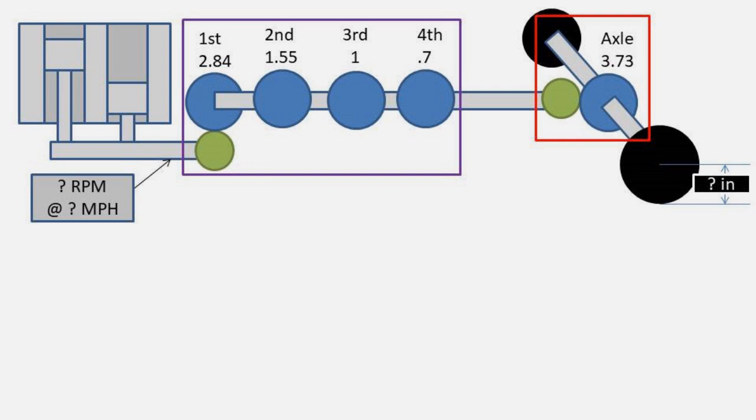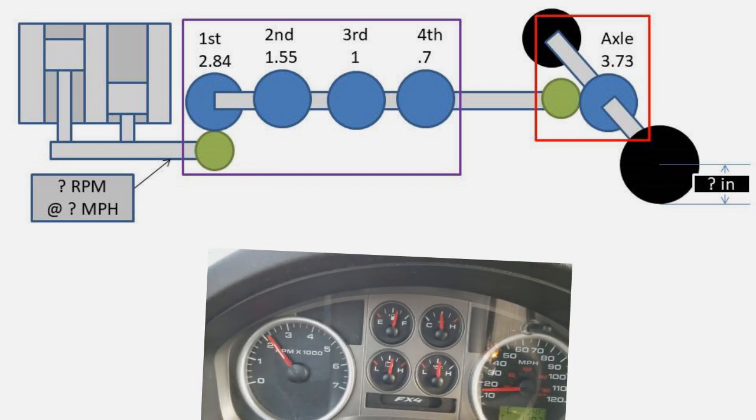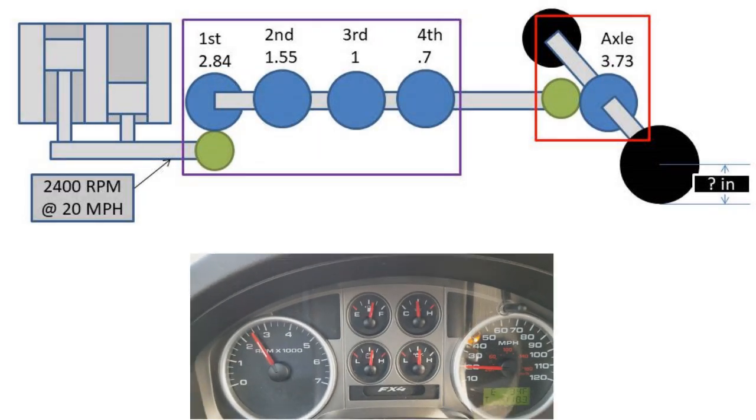We need to collect the engine RPMs and speed at the desired gear, in this case first gear, to find out how many times the wheels will spin around. We will use an engine RPM of 2400 RPMs at 20 miles per hour in first gear.